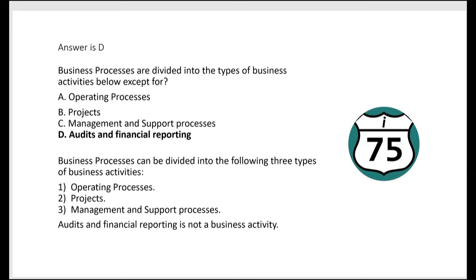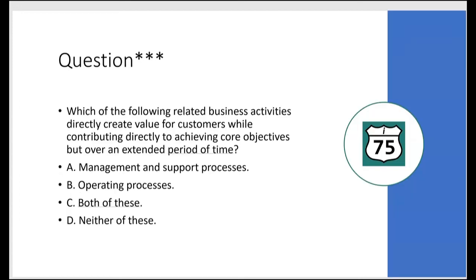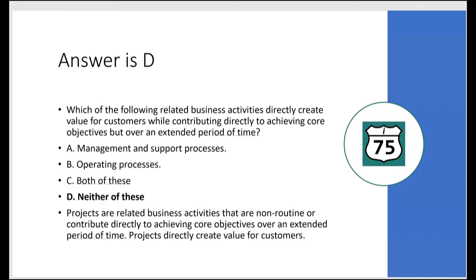Which of the following related business activities directly creates value for customers while contributing directly to achieving core objectives but over an extended period of time? A: management and support processes — no, they don't directly create value for customers. B: operating processes — they do directly create value, but the key phrase is 'over an extended period of time,' which points to projects. The answer is projects, because projects are related business activities that are non-routine or contribute directly to achieving core objectives over an extended period.